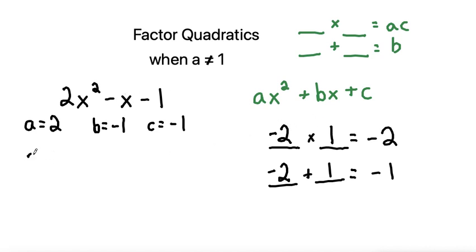We'll bring down the 2x squared, and then instead of writing negative x or minus x, we're going to say minus 2x and plus 1x. So we've broken this minus x down into two terms that are like terms—they both have x's in them but are using these as the coefficients, these special numbers that we just found. Then we'll bring down the minus 1.